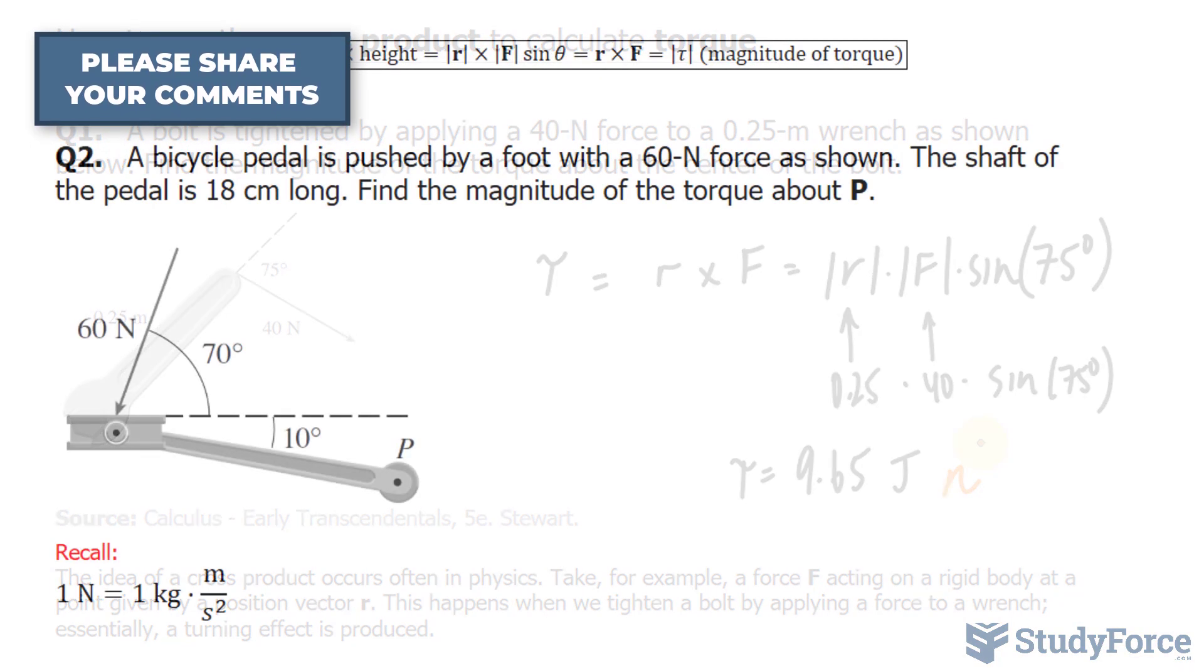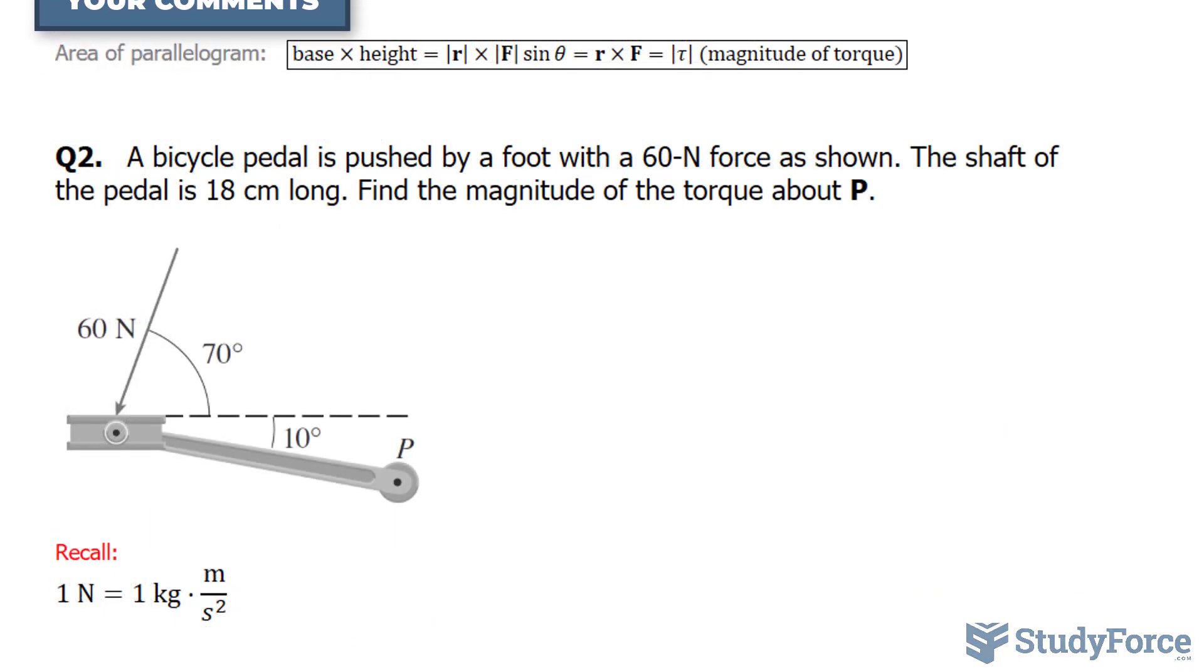Let's move on to question number two. In question number two, we're asked, a bicycle pedal is pushed by a foot with 60 newtons force as shown. The shaft of the pedal is 18 centimeters long. Find the magnitude of the torque at P. So this is one of our vectors, and the other vector is this one. And that force is being exerted at the point P.